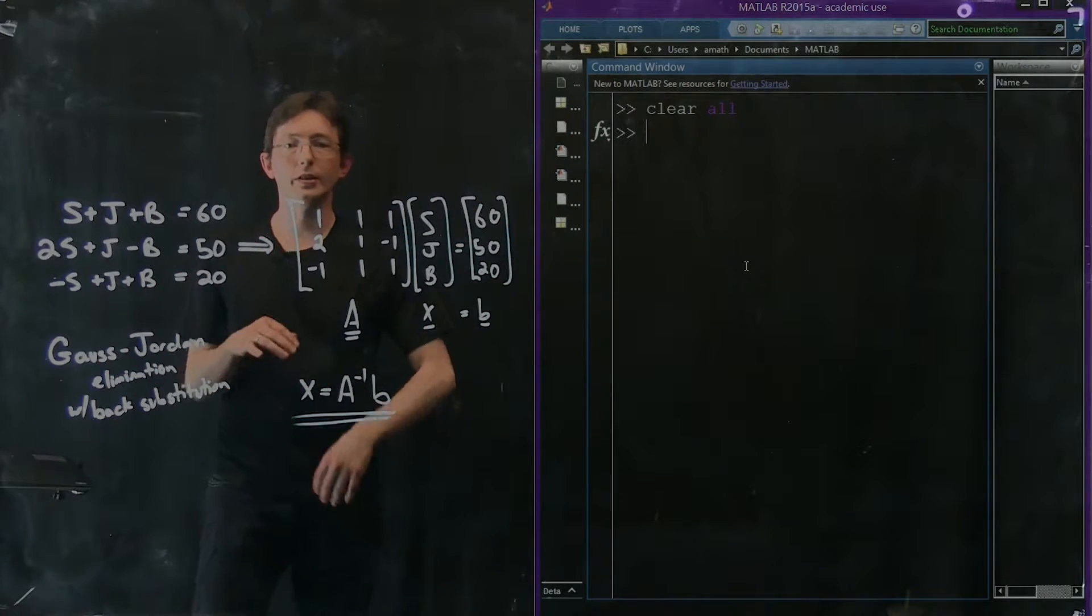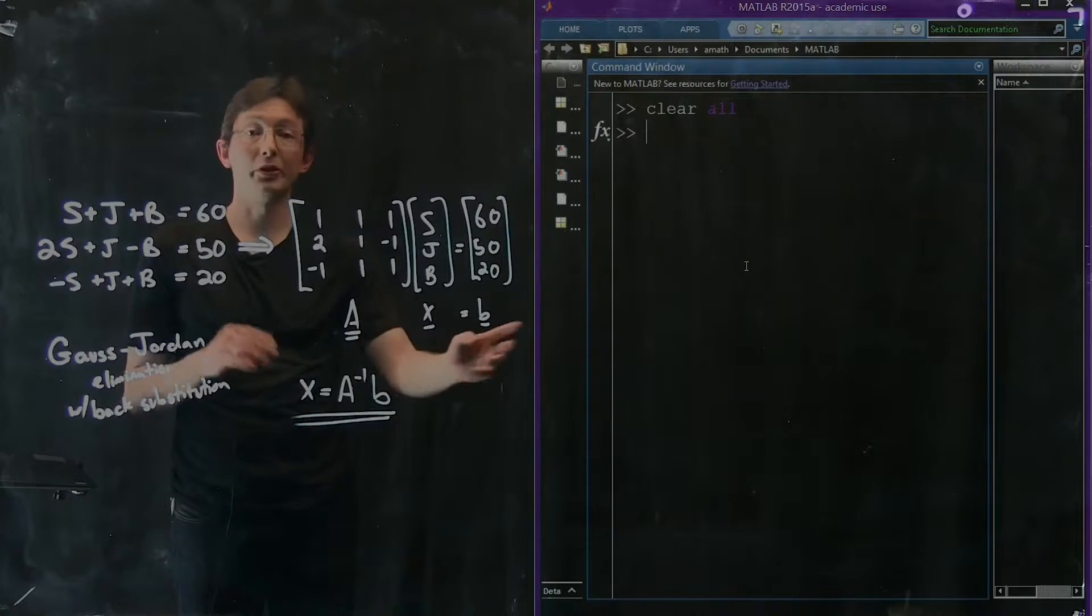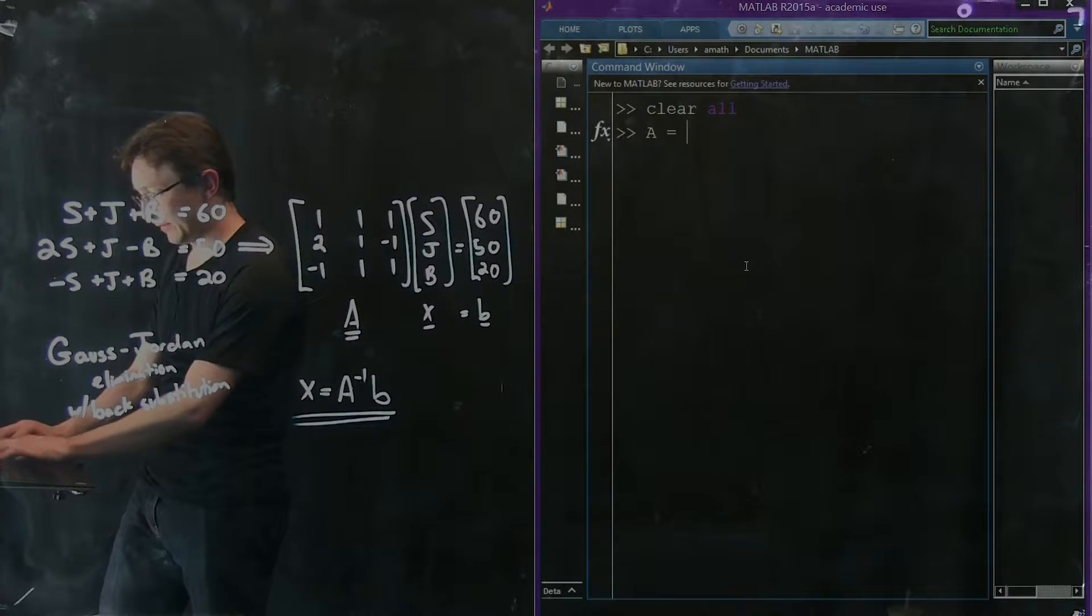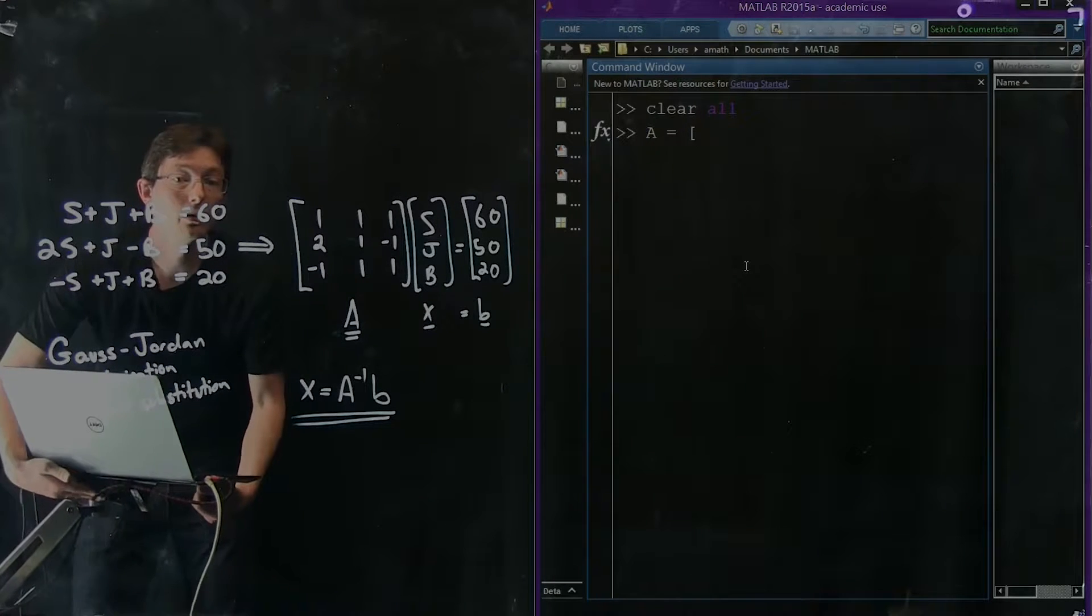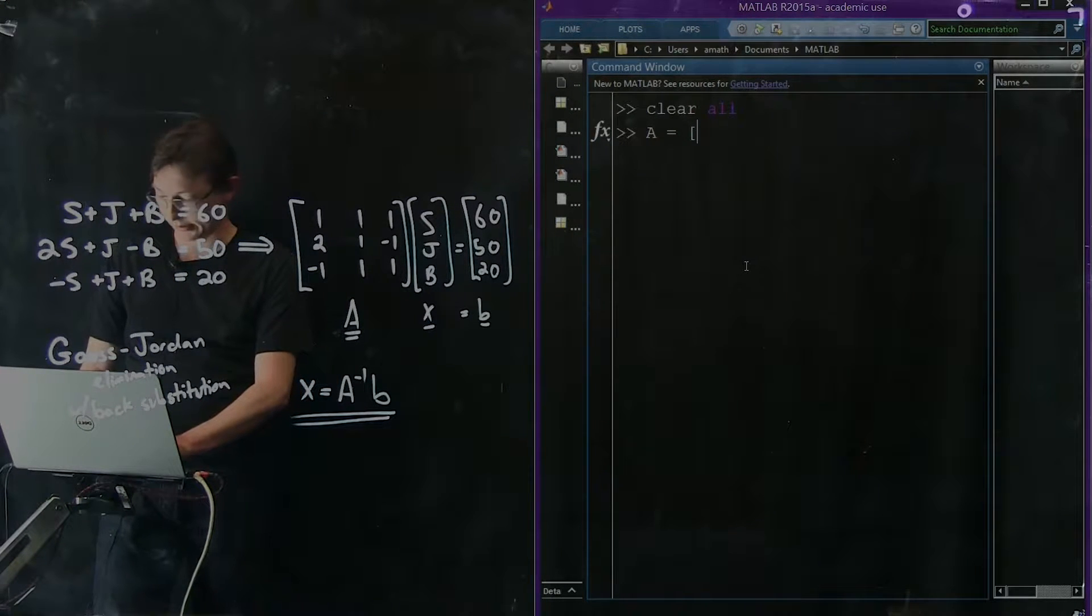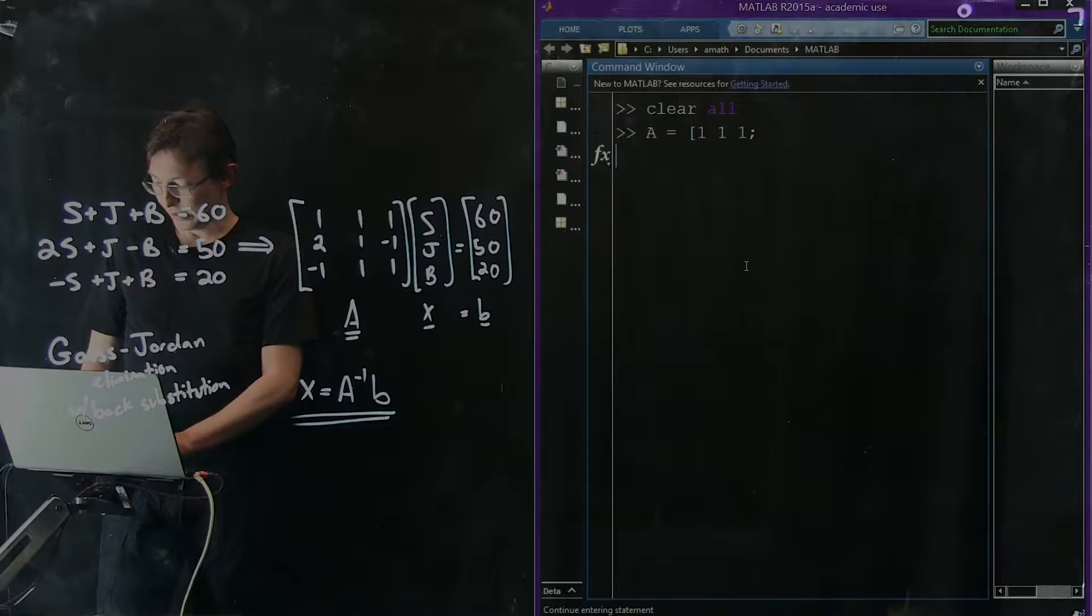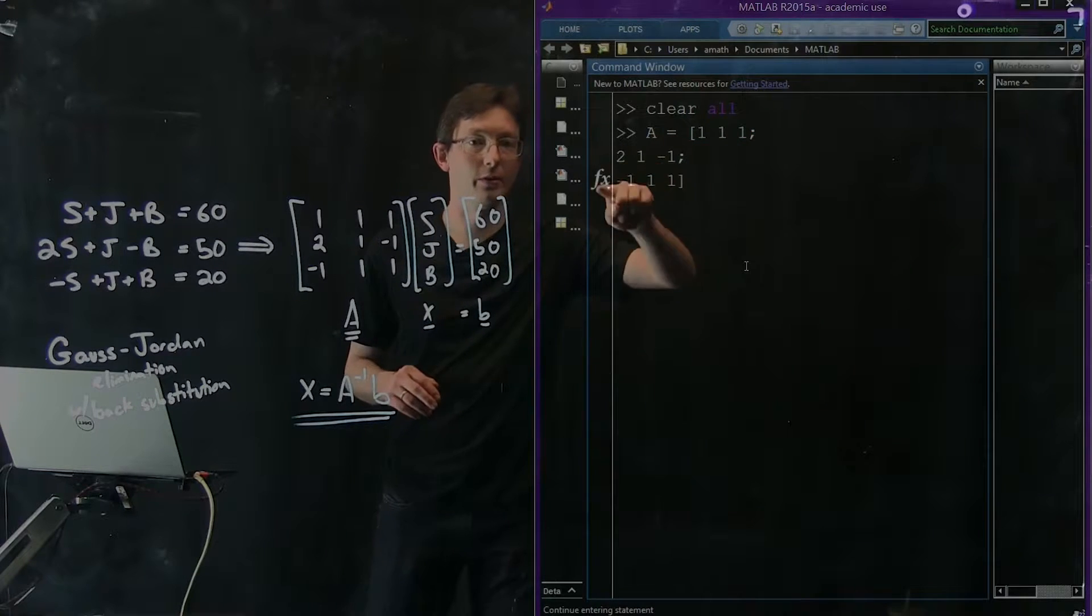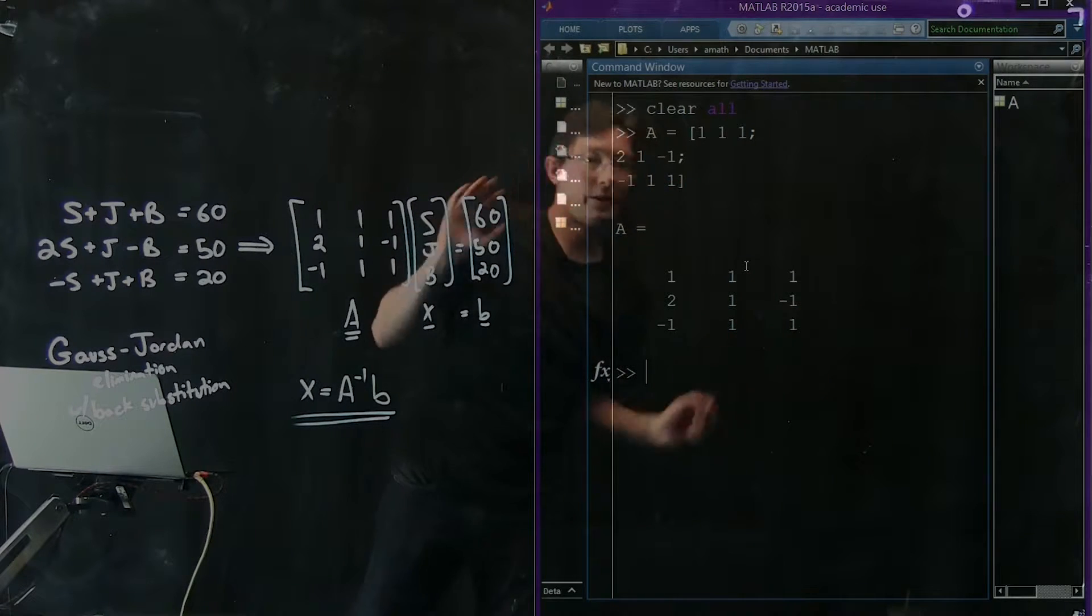The first thing we want to do is compute the inverse of A and multiply it by B. That should work, right? So let's define our A matrix. A equals, and we know what A is equal to: 1, 1, 1, followed by 2, 1, -1, followed by -1, 1, 1. These are my rows - first row, second row, third row of A. If I hit enter, it shows that's my A matrix.